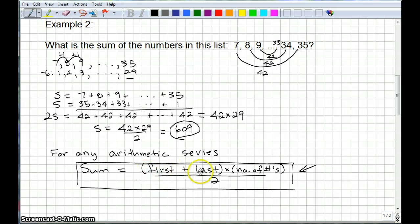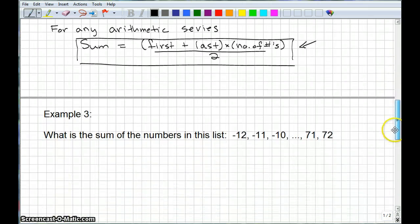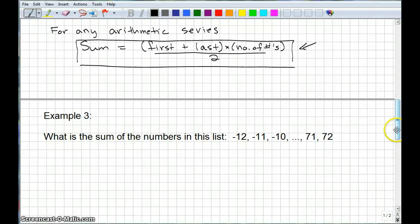And it doesn't have to necessarily be the first number and the last number, because really, the second number and the second to the last number, and the third number and the third to the last number, they all give you the same sum. But, usually, when you're given a series like this, you know the first number and you know the last number. So, that's just a convenient way to show it. And if you know how to figure out the number of numbers, which, again, there's a lesson on counting lists of numbers that should help you if you have trouble with that. So, let's use that some more and do some more problems. So, I'm going to scroll down. I'll leave that up there so we can refer back to it.